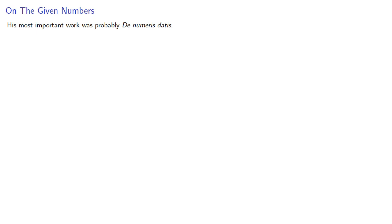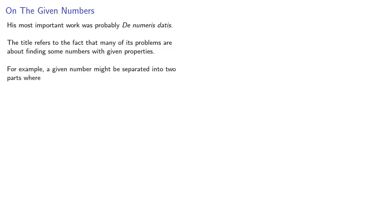His most important work was probably De Numeris Datis. The title refers to the fact that many of its problems are about finding some numbers with given properties. For example, a given number might be separated into two parts where the difference is known, the product is known, or the quotient is known.